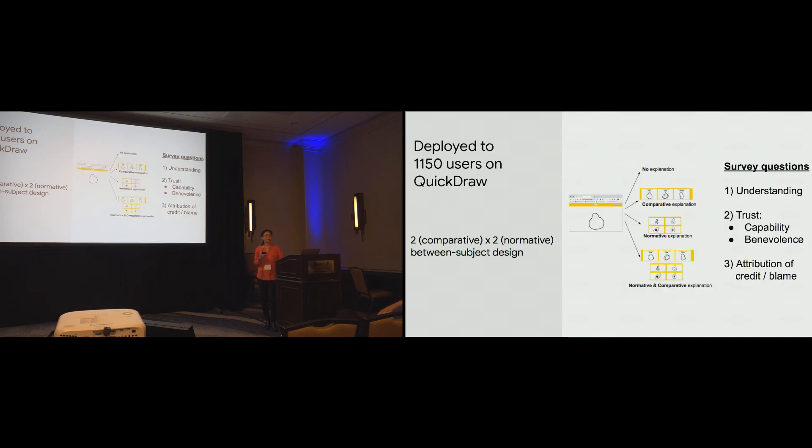And then, to measure the effect on end-user experience, we asked four survey questions. So, the first question addressed the extent to which users felt they understood the system. The second two questions got at user trust. So, two key dimensions of trust are capability and benevolence. So, we asked a question about the extent to which people felt the system was capable, and the extent to which people felt the system was benevolent. And then, finally, we asked a question regarding attribution of credit and blame. So, we asked people, given the decision that you just saw, would you attribute the decision more to your own drawing capabilities, or more to the system's capabilities?